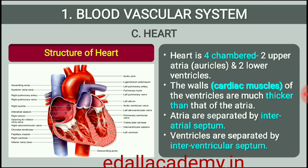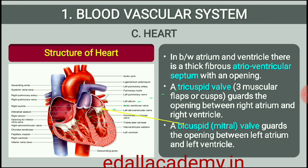Our heart has four chambers: two relatively small upper chambers called atria and two larger lower chambers called ventricles. A thin muscular wall called the interatrial septum separates the right and the left atria, whereas a thick-walled interventricular septum separates the left and the right ventricles. The atrium and the ventricle of the same side are also separated by a thick fibrous tissue called the atrioventricular septum. However, each of these septa are provided with an opening through which the two chambers of the same side are connected. The opening between the right atrium and the right ventricle is guarded by a valve formed of three muscular flaps or cusps, the tricuspid valve, whereas a bicuspid or mitral valve guards the opening between the left atrium and the left ventricle.